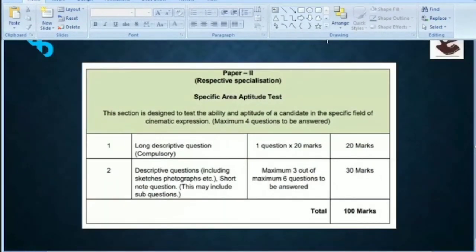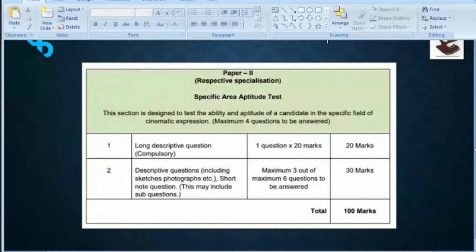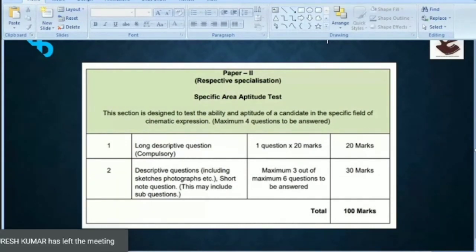Then Paper 2. Negative marking is minus 0.25. Paper 2 is again for your respective specialization, the area or core you will be applying for. This section is designed to test the ability and aptitude of a candidate in the specific field of cinematic expression.